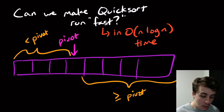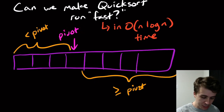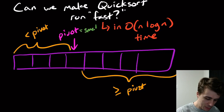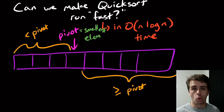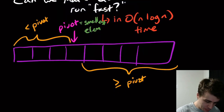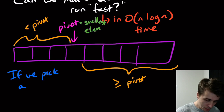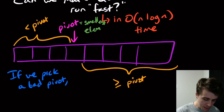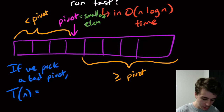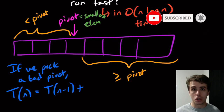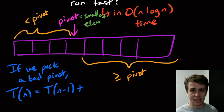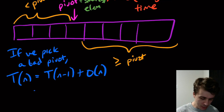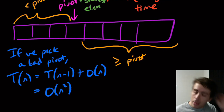The problem is: suppose the pivot is the smallest element of the array. Then we'll have n minus 1 elements on one side. If we pick a bad pivot every time, the runtime to sort n things is T(n-1) plus O(n) — the linear time to scan through the array and move elements around the pivot. Solving this gives O(n²).